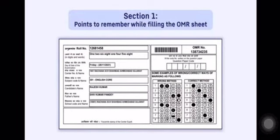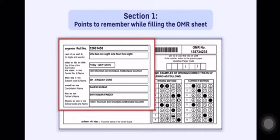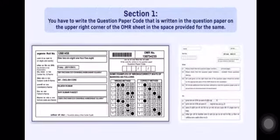Section 1: Points to remember while filling the OMR sheet. All your details like your roll number, name, etc. will be pre-filled in the OMR. You have to write the question paper code that is written in the question paper on the upper right corner of the OMR sheet in the space provided for the same.